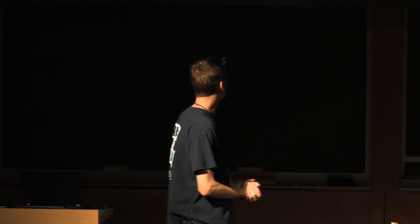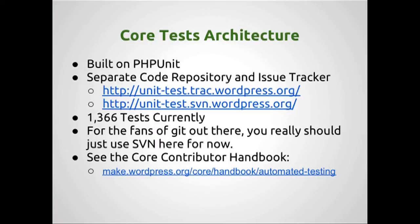If you're using IDEs such as NetBeans, Komodo, or PhpStorm, you'll find they have built-in support for PHPUnit, with menu options and GUI items for automated testing. The WordPress core unit tests are not included in the WordPress download — they're in a separate repository at unittest.svn.wordpress.org, with the issue tracker at unittest.trac.wordpress.org. This ensures that live WordPress installations don't have extra testing files that could potentially cause a security hole.